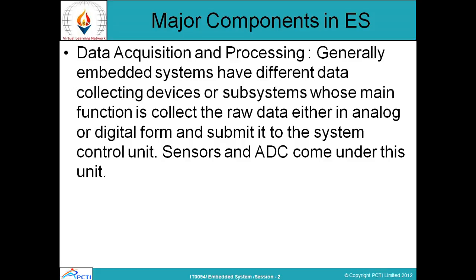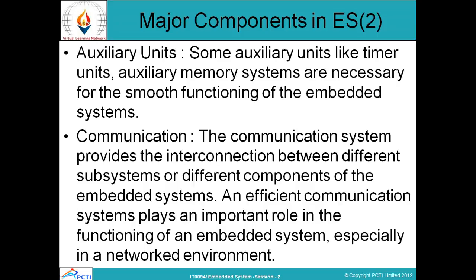For any embedded system, the first and most important major component is data acquisition and processing. Data acquisition refers to collecting inputs from various sources. Since our computing system is digital, we also require analog-to-digital converters. Next are auxiliary units — these are additional units that generate some special signals, for example a timer. There can also be a memory system, permanent storage, and even a printing system.